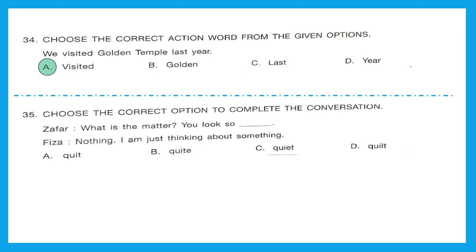Question 35, choose the correct option to complete the conversation. Zafar: What is the matter? You look so dash. Vizan: Nothing, I am just thinking about something. What will come in the place of blank? Will it be quit, quiet, quite or quilt? The right answer should be quiet. Zafar is asking what is the matter and why Vizan is keeping silence. Quiet means keeping silence and that is going to be the right option. Option C, quiet.